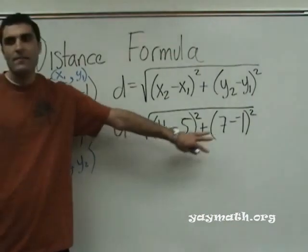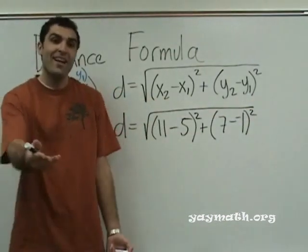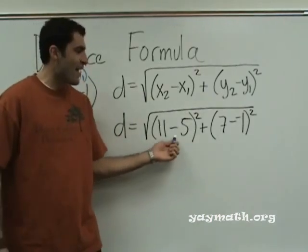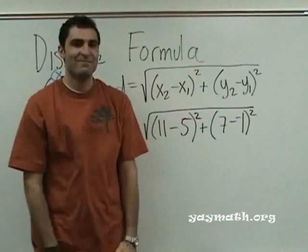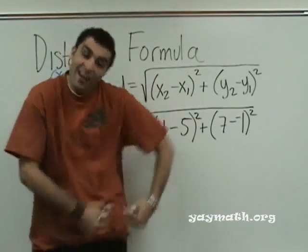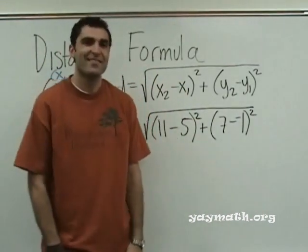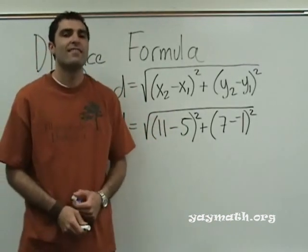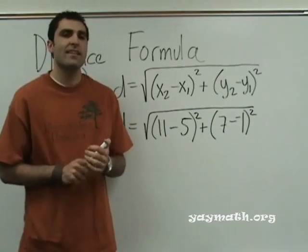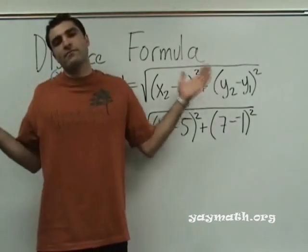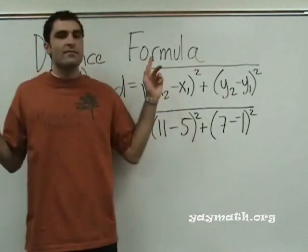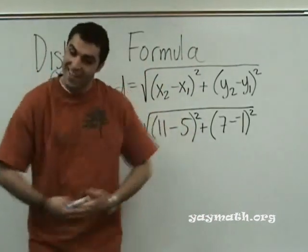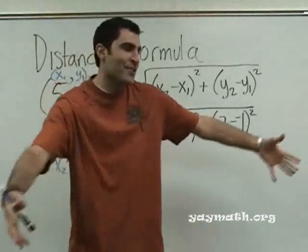What is 11 minus 5 squared? Eleven minus 5 squared. What's 11 minus 5? Six. Six squared is 36.